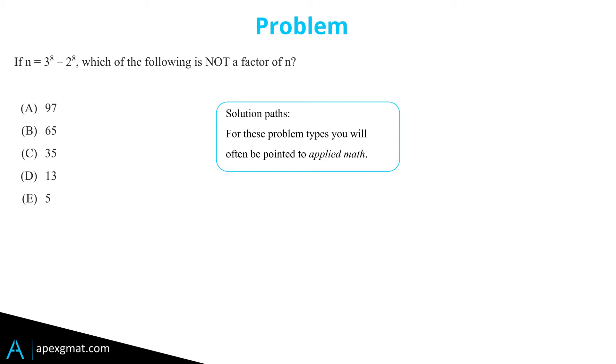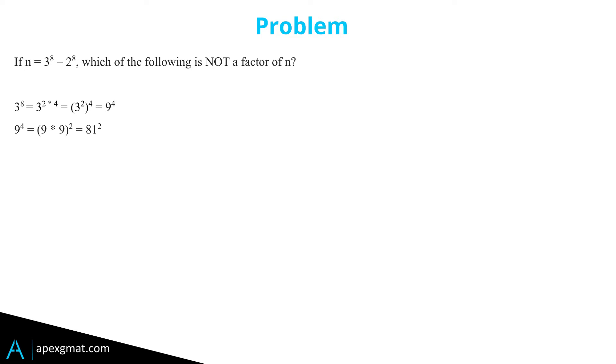We'll take a look at this really quickly. 3 to the eighth is the same as 9 to the fourth. 9 times 9 is 81 squared, about 6400. Or if we want to get exact, which we do need to do here because we're dealing with factors, 81 times 81 is 6561.